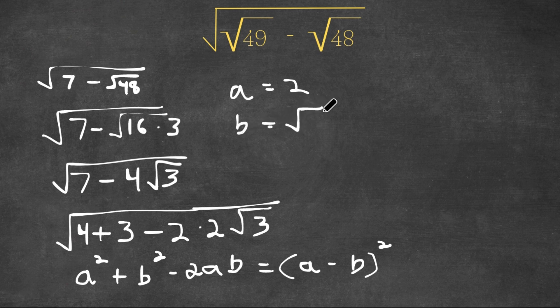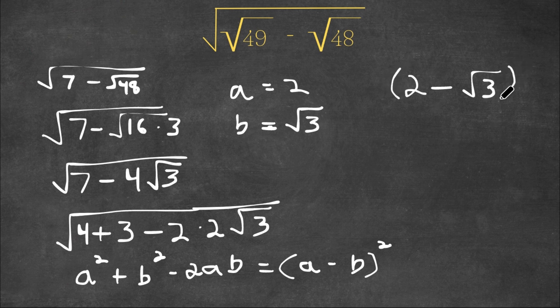So now we simply have to plug in a and b for a minus b squared. So a is 2, so we have 2 minus b, which is the square root of 3, and we have this squared. So this is our answer.